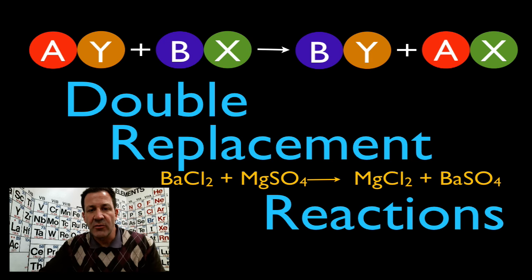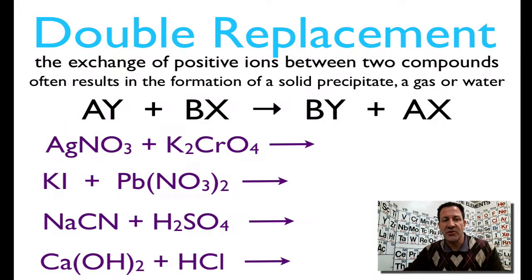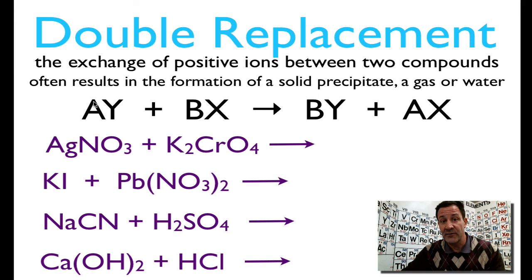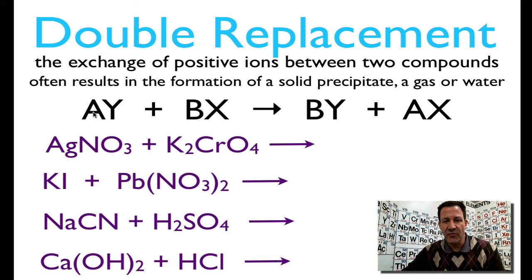In today's video I'm going to go over double displacement or double replacement reactions. Double replacement reactions are when there is an exchange of positive ions between two compounds. You can see we have two compounds — that's often the easiest way to identify a double displacement reaction. We have two compounds on the left and two compounds on the right, and often this kind of reaction will result in the formation of a solid precipitate, a gas, or water.